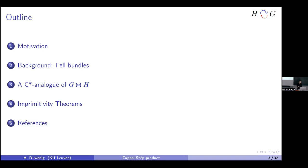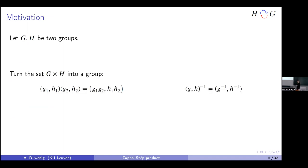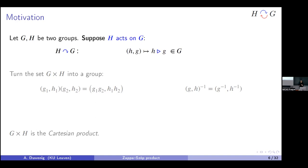We start with two groups. The first thing we do is take their Cartesian product, make it a group by pointwise multiplication and pointwise inversion — the Cartesian product group. If I take a step back and assume that group H acts on group G, I can construct a more interesting group. I use blue for H acting on the left of G, with a little triangle pointing at the thing being acted on.